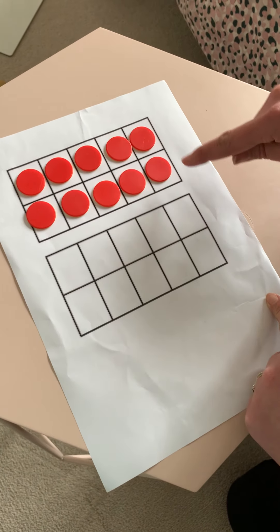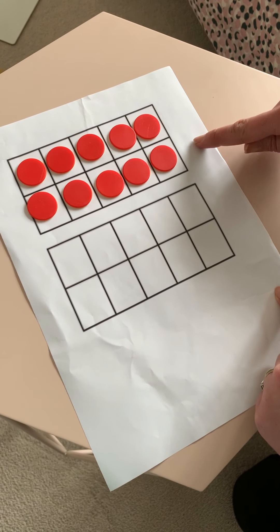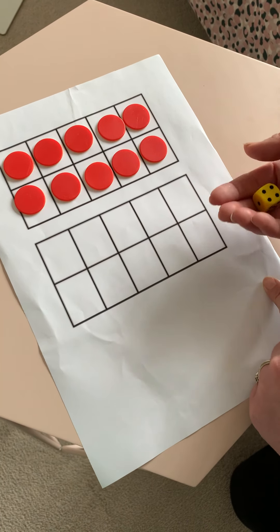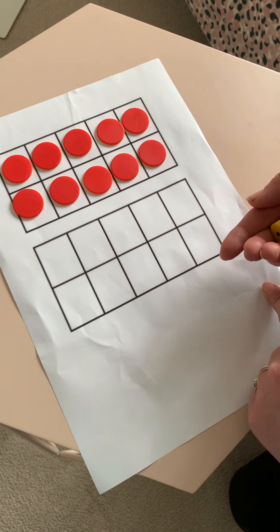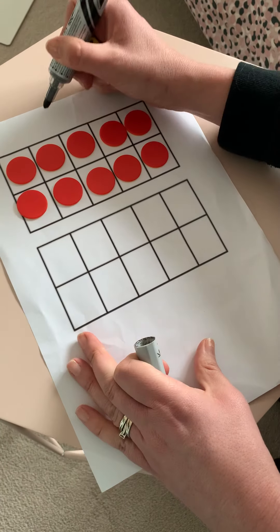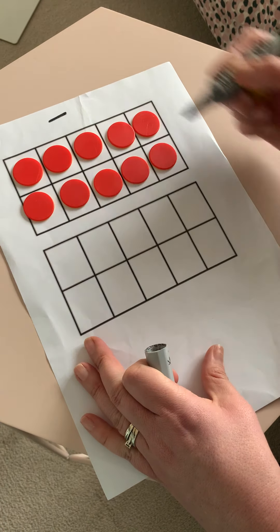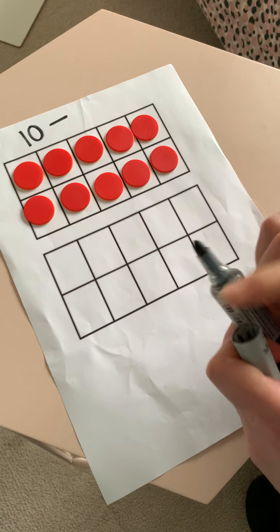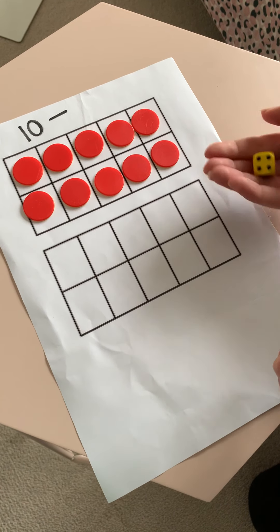we're starting with our 10 counters in our 10s frame. So I'm going to use a die today, and we're going to roll the die to see how many of the counters we're going to take away. And remember our take away sign looks like this. So I'm starting with 10, and we're going to roll the die to see how many we're going to take away. So let's have a look.